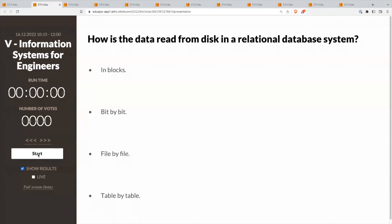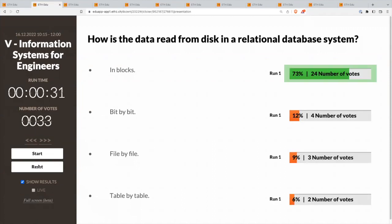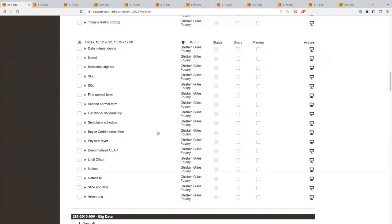How is the data read from disk in a relational database system? In blocks, bit by bit, file by file, or table by table? The granularity of the read every time you read something. I don't see how many fell asleep during the lecture today. That's from today's material. Let me give you the answer. It is in blocks. In blocks or pages, also called pages. This is batch processing. This is to avoid latency. If you do it bit by bit, you can come back in 10 years to have the complete table.